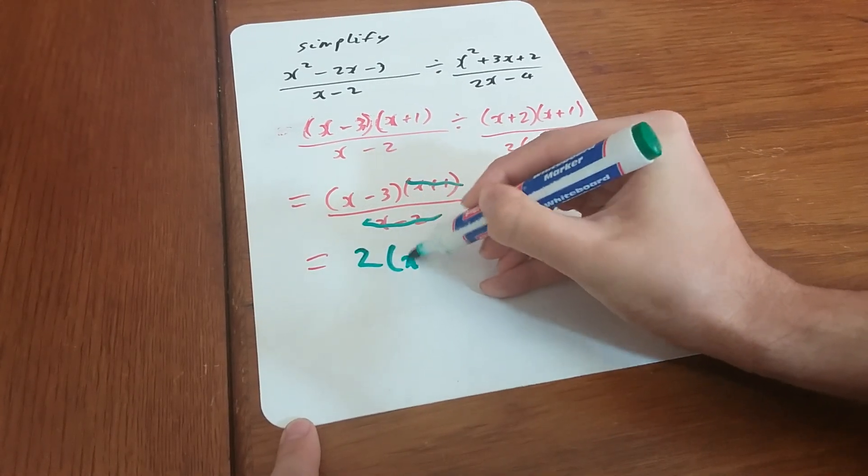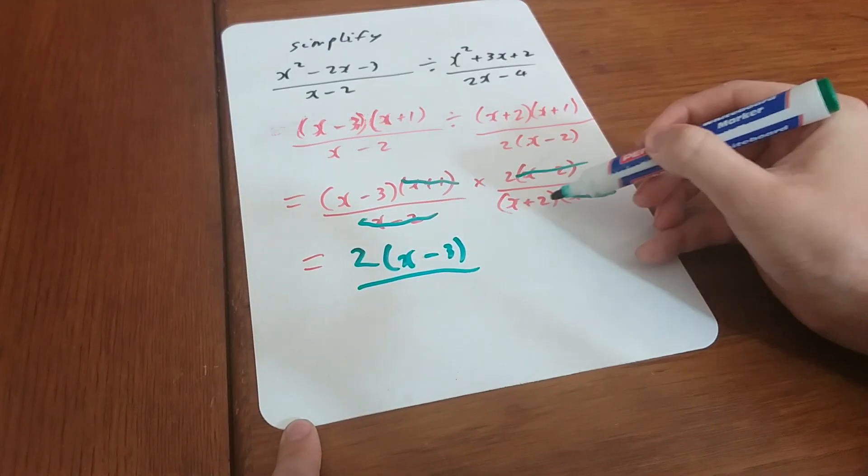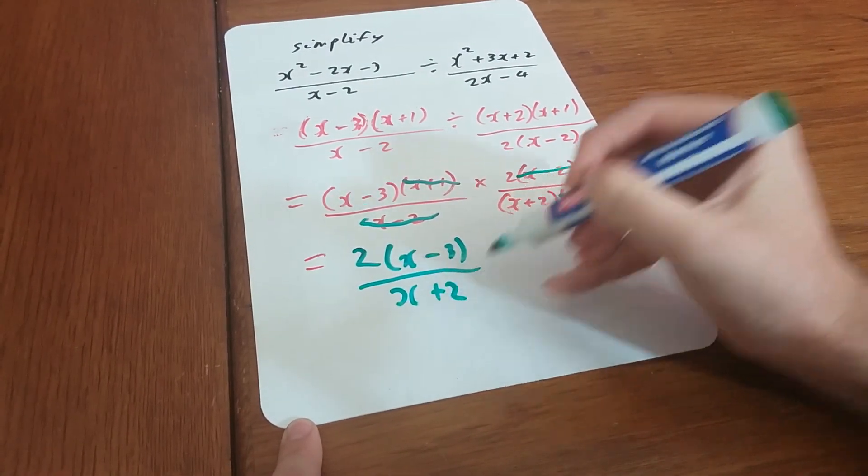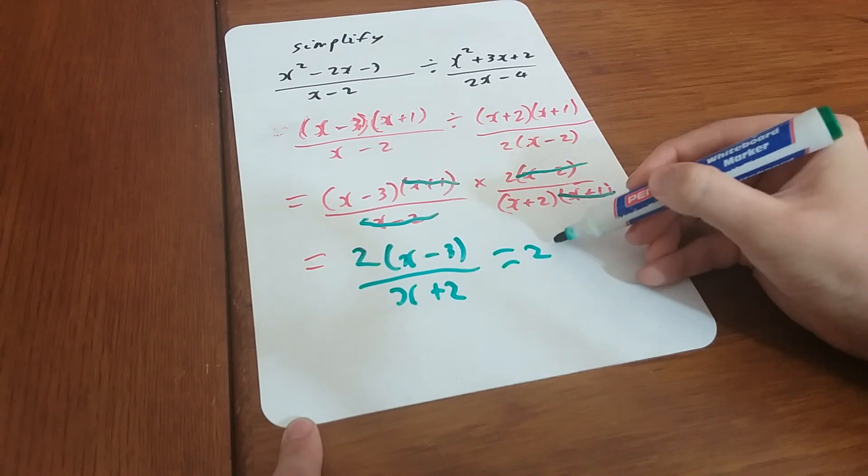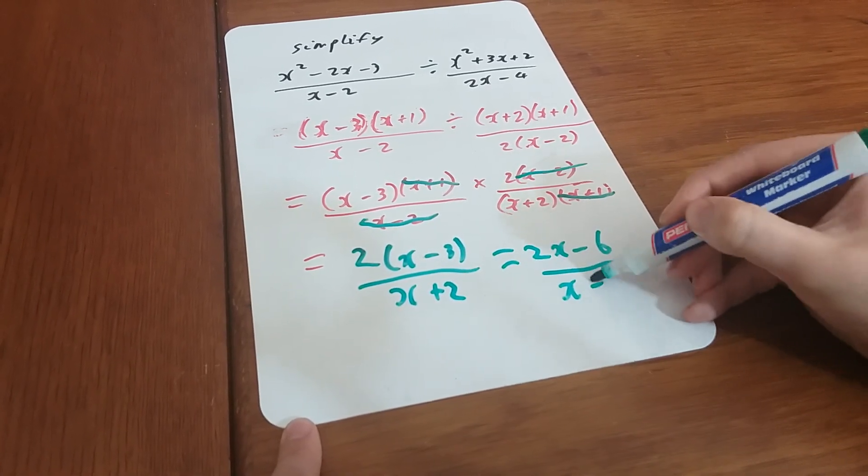Nothing else looks like it's the same. So on the top the things I've got left are 2(x minus 3), and on the bottom I've just got this factor x plus 2. I could leave it like that. I might just expand it out: 2x minus 6 over x plus 2.